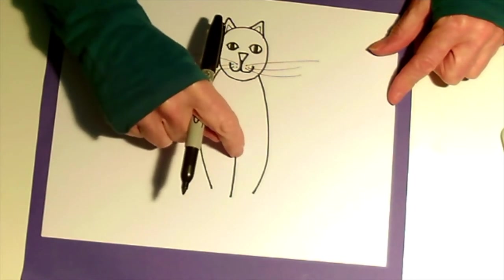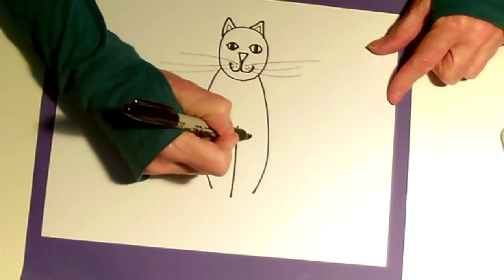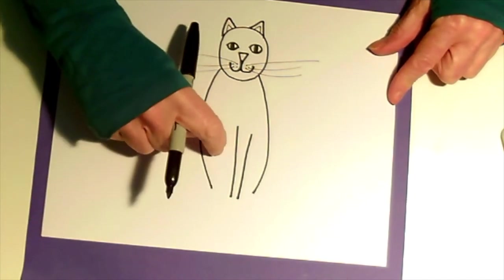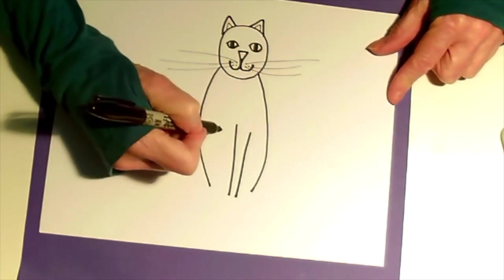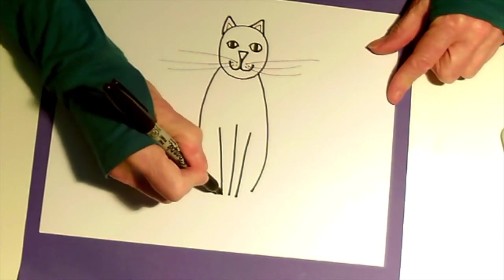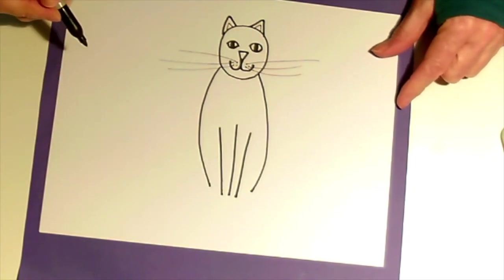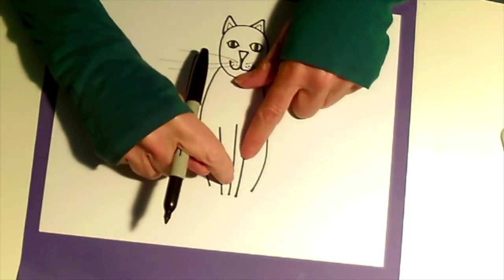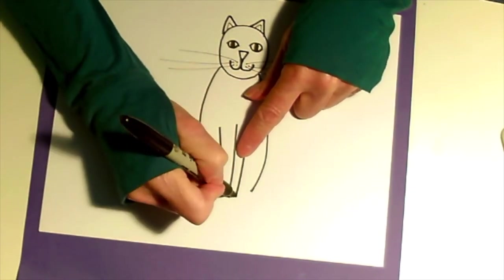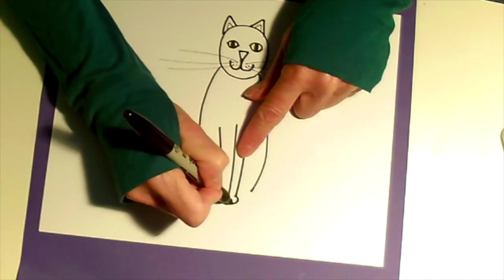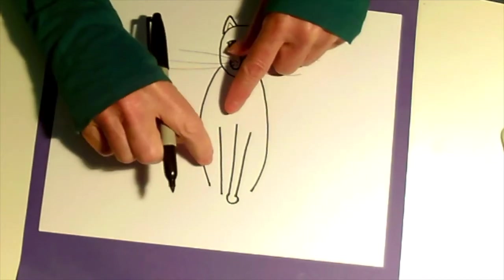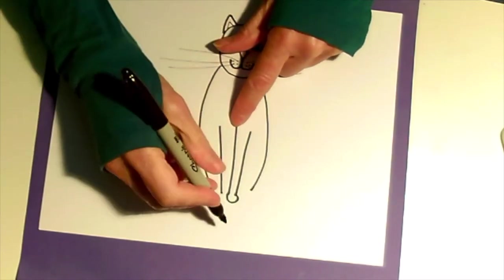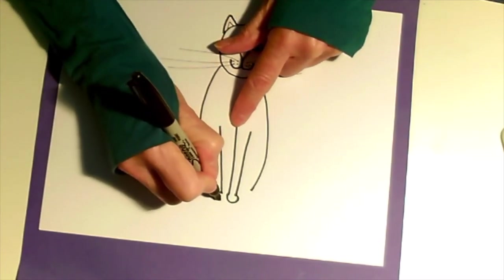Once you've done that on either side, come down and draw another line. Go on the other side of that first straight line and draw another line. Those will be the front legs. We need paws, so on these two lines just draw a half circle. And the legs are very close together, so on these two lines just draw another half circle. So you have the front paws.